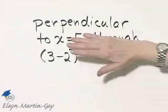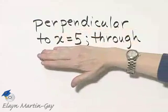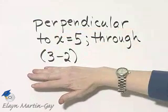We want to write an equation of the line that is perpendicular to this line, but that goes through this point.